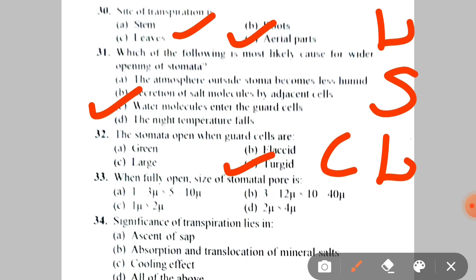Next question: when fully opened, the size of stomatal pore is A. 1-3 micron × 5-10 micron, B. 3-12 micron × 10-40 micron, C. 1-2 micron, D. 2-4 micron. This is a factual question. We should know that when stomata is fully opened, the size is 3-12 micron × 10-40 micron. The correct answer is B.